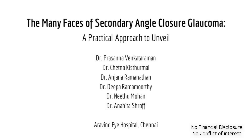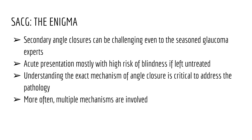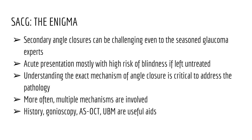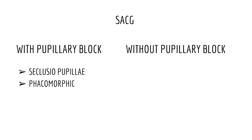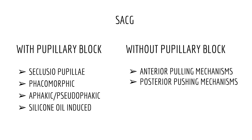The many faces of secondary angle closure glaucoma: a practical approach to unveil. Secondary angle closure glaucomas can be challenging even to seasoned glaucoma experts. More often, multiple mechanisms are involved in angle closure, which can be picked up by a detailed history, gonioscopy, ASOCT, and UBM imaging. We aim to simplify secondary angle closure by this classification to better understand it, presenting a series of case scenarios describing how we diagnosed and treated angle closure.